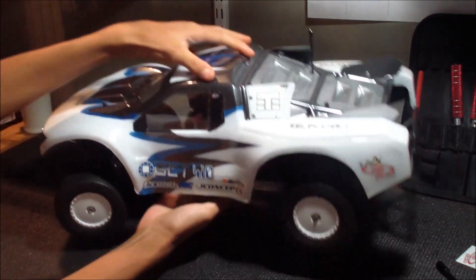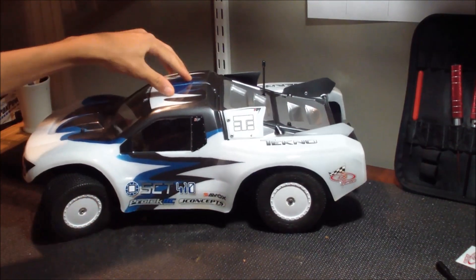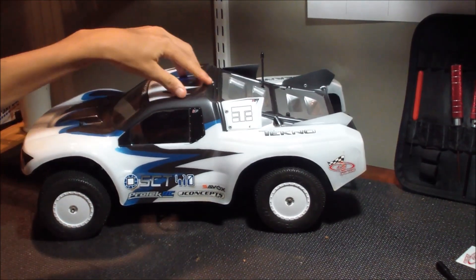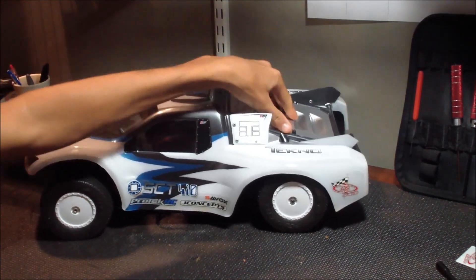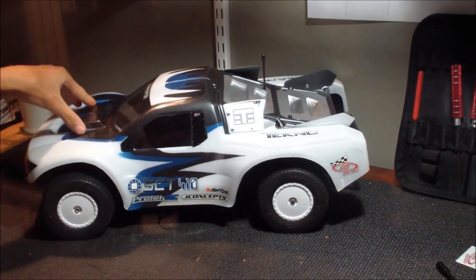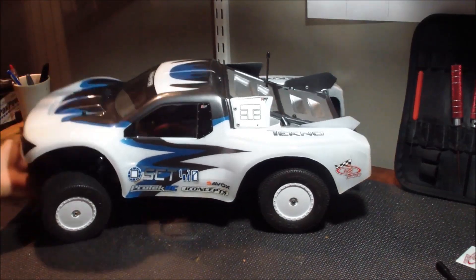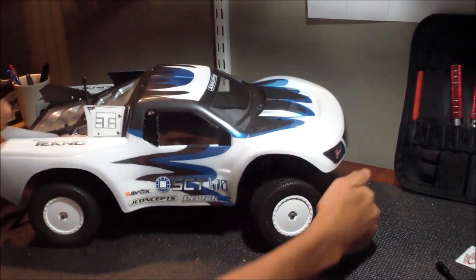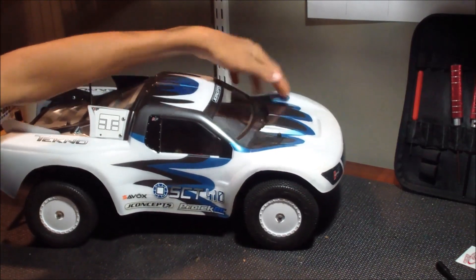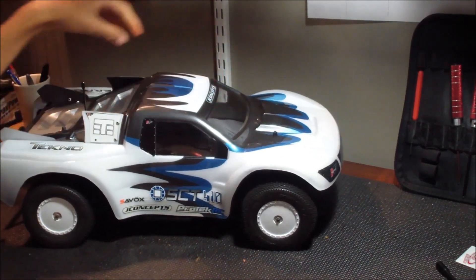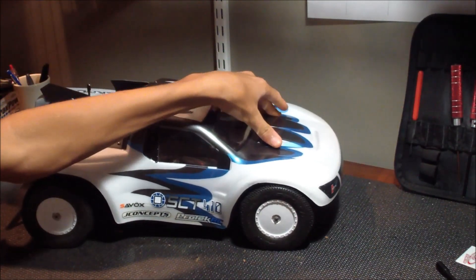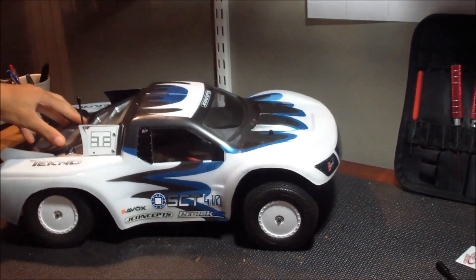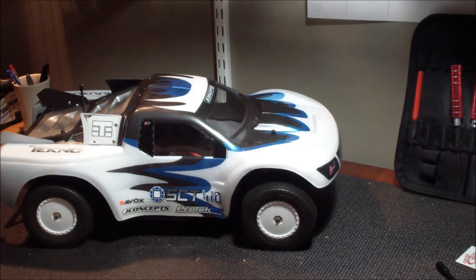There it is with the body on. That's right height right there. Offset seems pretty good with this body. No binding or rubbing issues. Here's the first side. Once again, no rubbing on the fenders, which is good. And now that you see that, I'm going to throw on the stickers real quick and show you what that looks like.